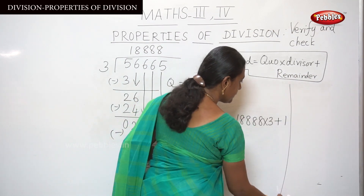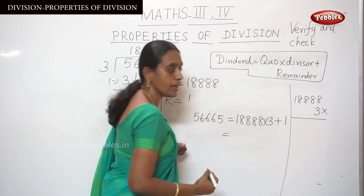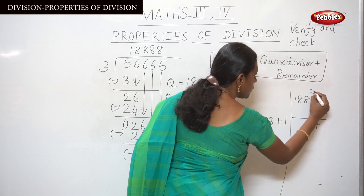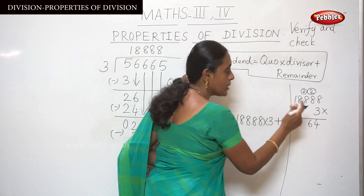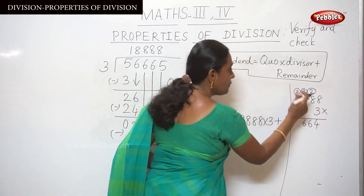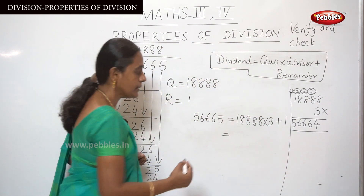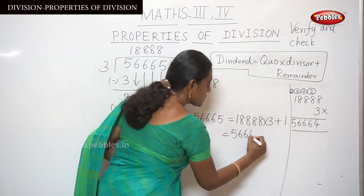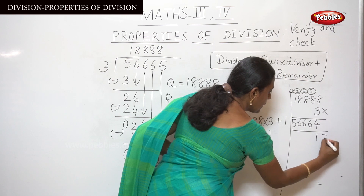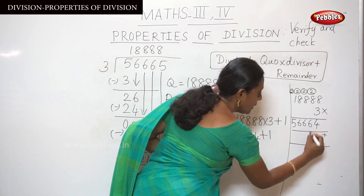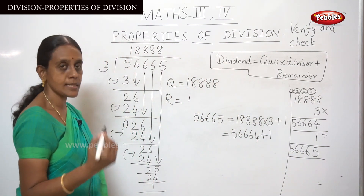Multiplying 18,888 × 3: 8×3=24, write 4 carry 2; 8×3=24 plus 2 is 26, write 6 carry 2; 8×3=24 plus 2 is 26, write 6 carry 2; 8×3=24 plus 2 is 26, write 6 carry 2; 1×3=3 plus 2 is 5. So 18,888 × 3 = 56,664. Then add the remainder: 56,664 + 1 = 56,665.